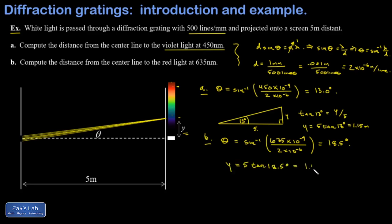For the red fringe, y = 5·tan(18.5°) = 1.67 meters. So if you run a narrow bright white beam through this diffraction grating, you'll project a rainbow on the wall running from 1.15 meters off-center for violet to 1.67 meters off-center for red — always starting with violet closest to the center, since shorter wavelengths need a shallower angle to achieve a one-wavelength path length difference between adjacent slits. If you find the physics content on Zax Lab helpful, click the logo to browse playlists and subscribe.